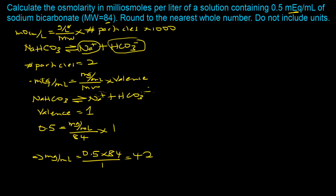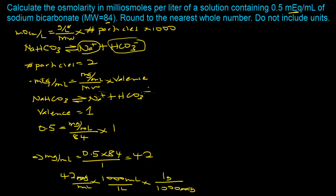The 42 has units of milligrams per milliliter, but we need grams per liter. Converting: 42 mg/mL times (1000 mL / 1 L) times (1 g / 1000 mg) — the thousands cancel out — gives 42 grams per liter. Note that whenever you do this conversion, the numeric value stays the same.